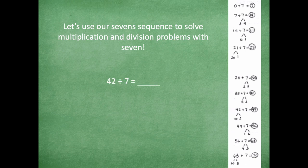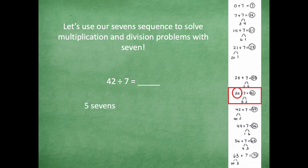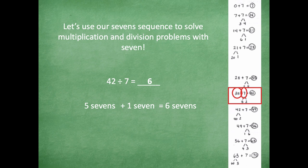So here I have 42 divided by seven. So I'm going to come over to my seven sequence, I'm going to find 42. I know that there are five sevens in 35 plus one seven, which gives me six sevens. So 42 divided by seven equals six. Pretty cool how we can use that, right? Okay, so let's look at another example.